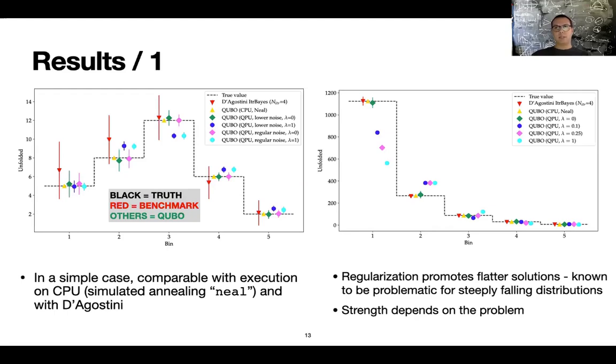It's probably more interesting to look at the steeply falling spectrum, because this shows the effect of the regularization. Now, this is known also from classical calculations that if you're promoting smoother solutions for a spectrum that is not smooth at all, they're not supposed to match the result. In fact, they don't. So the only solutions that match the result are basically the Agostini unfolding that has no inherent smoothing parameter, and then the QUBO solutions with Lambda set to zero. If you set Lambda to a number that is not zero, then you have some difference, especially in the first two bins. So this is a kind of sanity check because it was not expected to find the correct solution, and in fact it doesn't.